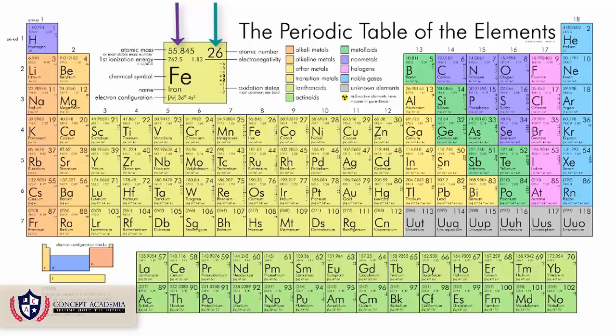This smaller number is called the proton number; it is also called the atomic number. And this bigger number is the nucleon number, which is also called the atomic mass. We shall talk more about the proton number and the nucleon number.